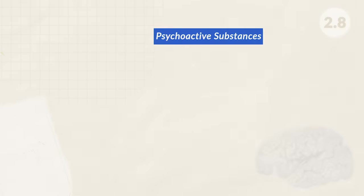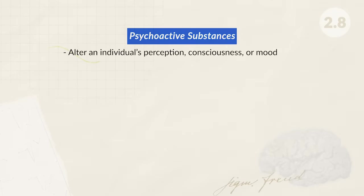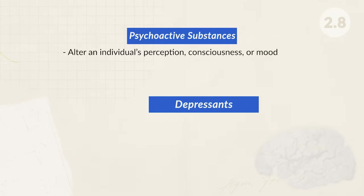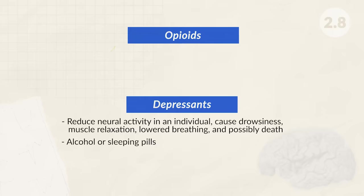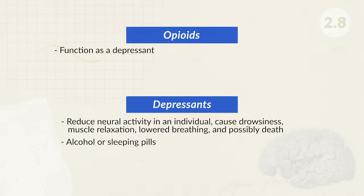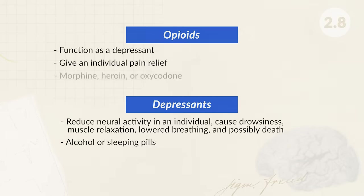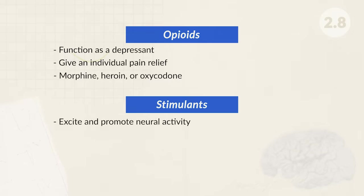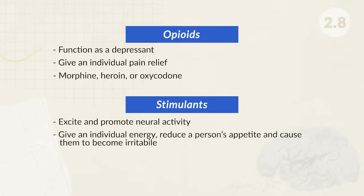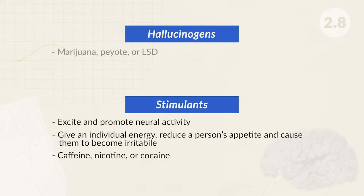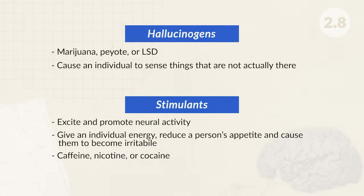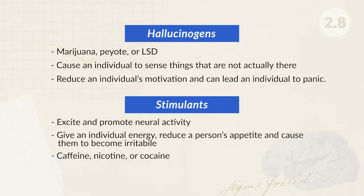When looking at our consciousness and our brain, we can see that different drugs have different impacts on our state of mind. Psychoactive substances purposely alter an individual's perception, consciousness, or mood. These drugs can be broken down into a couple of categories. Depressants are drugs that reduce neural activity, causing drowsiness, muscle relaxation, lowered breathing, and if abused, possibly death — examples include alcohol or sleeping pills. Opioids also function as a depressant but have their own category due to their addictive nature, giving individuals pain relief; examples include morphine, heroin, or oxycodone. Stimulants excite and promote neural activity, giving individuals energy, reducing appetite, and causing irritability — examples include caffeine, nicotine, or cocaine. Lastly, hallucinogens — which include marijuana, peyote, or LSD — cause an individual to sense things that are not actually there, can reduce motivation, and can lead an individual to panic.